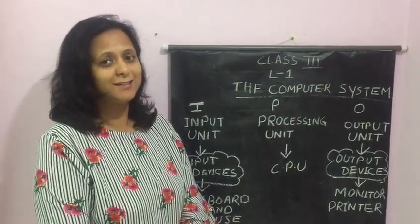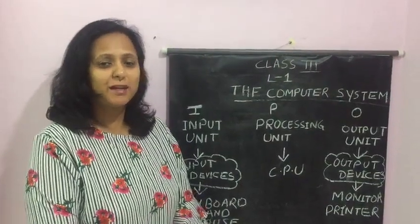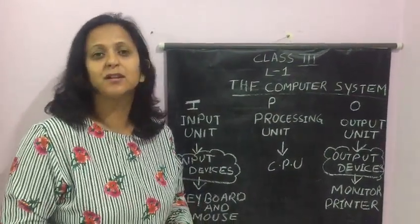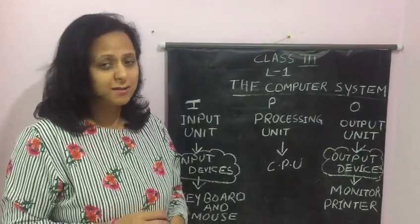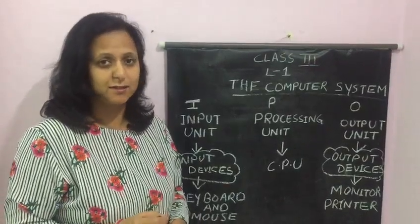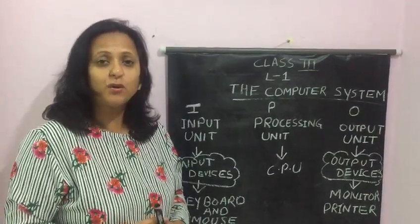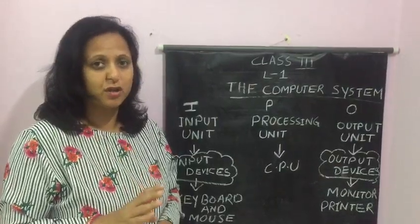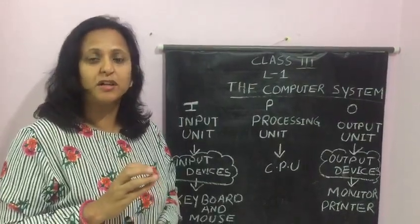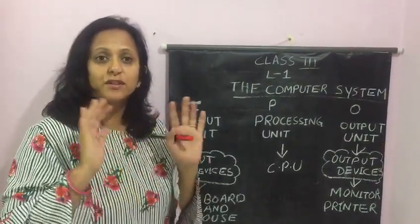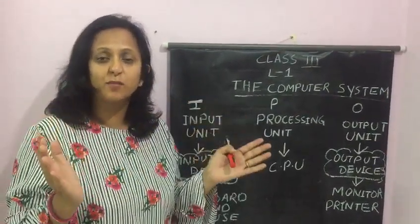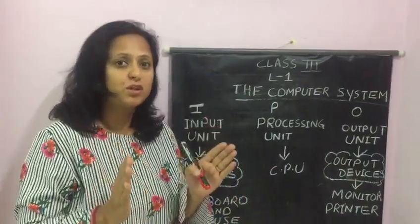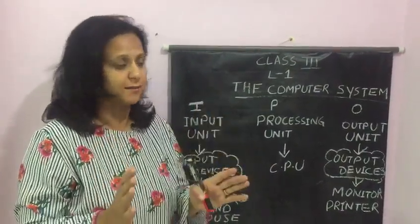Good morning children. Today I am going to start with the chapter: the computer system. Now, what is a computer system? You all know that there are four main parts of a computer: monitor, keyboard, CPU, and mouse. So, different parts of the computer all together make up a computer system.